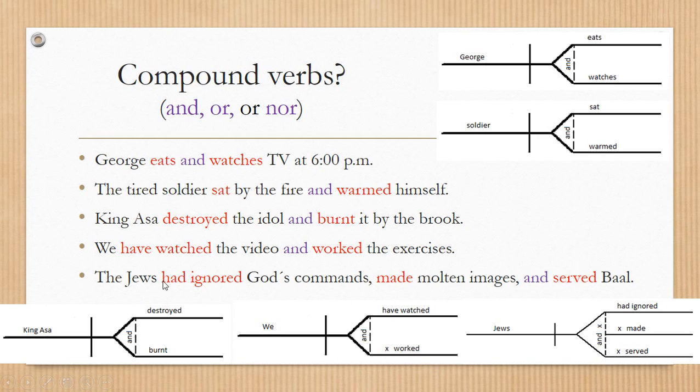we don't have the auxiliary had, because we could say the Jews had ignored God's commands, they had made molten images, and they had served Baal. That's why we placed the X, because of the auxiliary has been omitted.